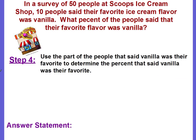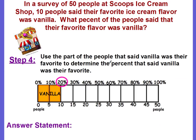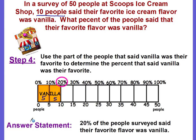Step four: use the part — 10 people preferred vanilla — to find the percent. The first part represents 5 people, the second part represents another 5, which equals 10 people total. So the first two parts represent 10 people. Going up to the percent bar, that's 20 percent. The answer statement: 20% of the people said their favorite flavor was vanilla.